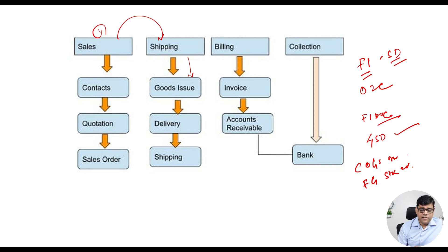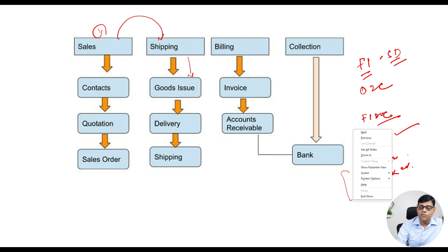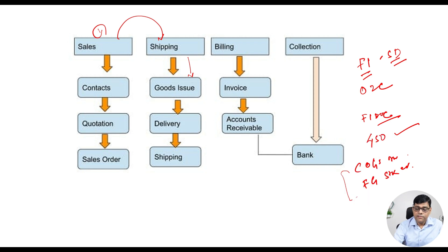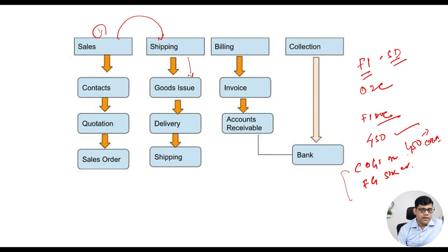To summarize the flow: first the sales order is created, the sales order converts into a delivery note, the delivery note converts into PGI (post goods issue), and with reference to that, the accounting document is generated. That 450 cost will transfer to your COPA for internal cost and profitability analysis, and it will also transfer to your income statement.